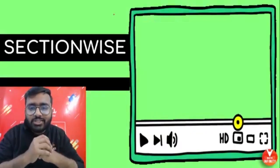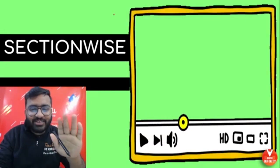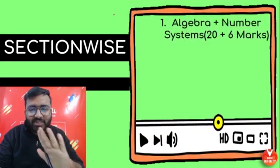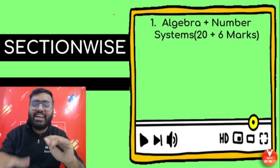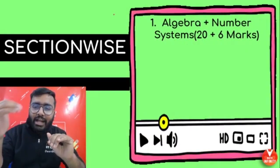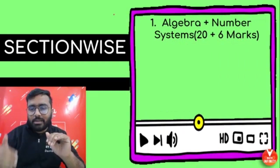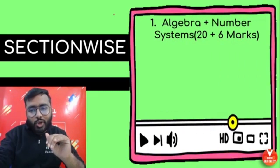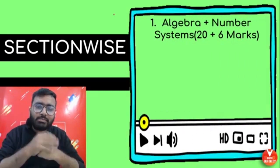Now let's look at the section-wise weightage. Algebra plus Number System carries 20 plus 6 marks — that is extremely important. Trigonometry is 12 marks total. Let's go chapter-wise so you get an even clearer picture and can prepare more thoroughly.